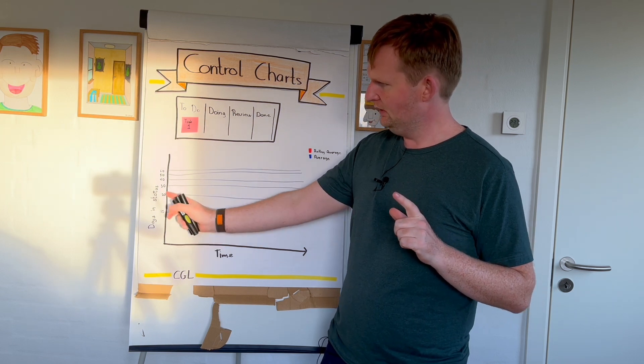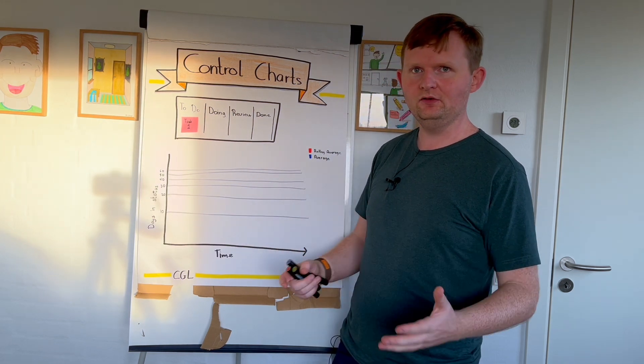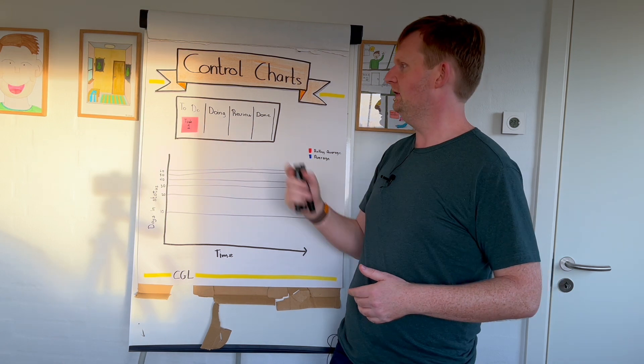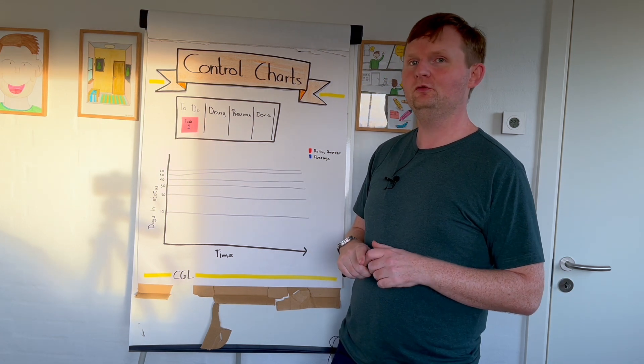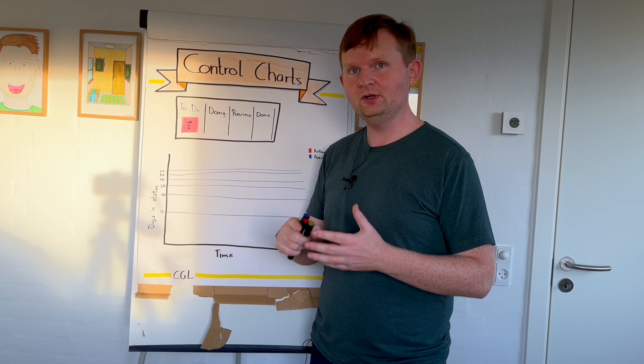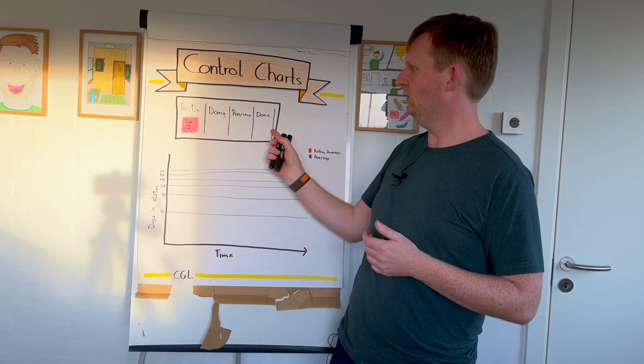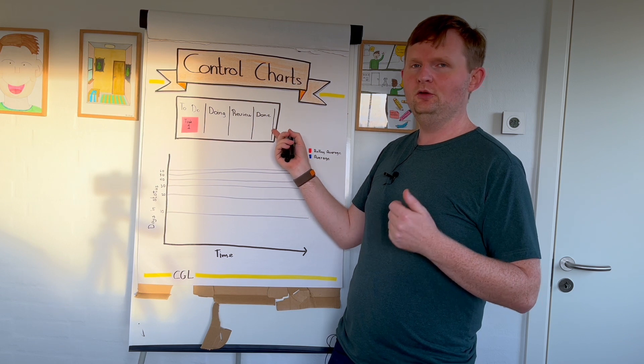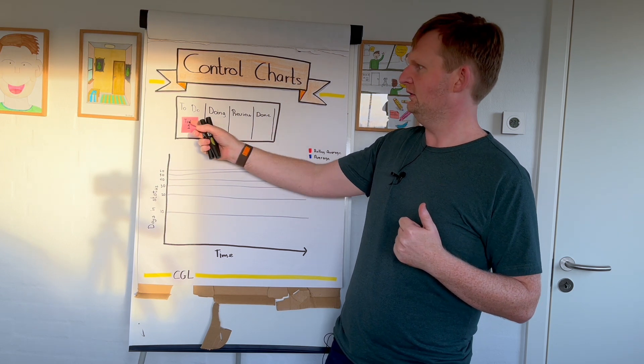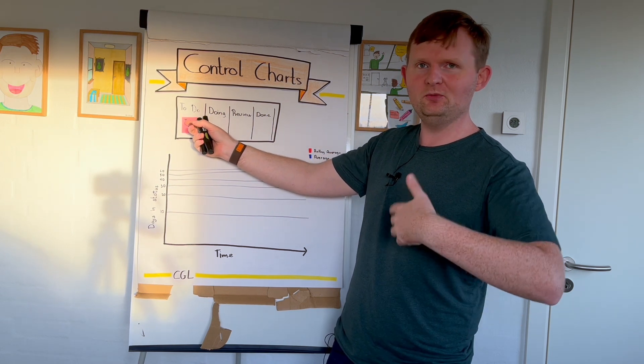And these statuses, for instance in Jira, you can select what statuses we want to focus on. What I normally do when I look at this—I'm interested in from when we start something all the way to it's done, because that's really where we're working on it.